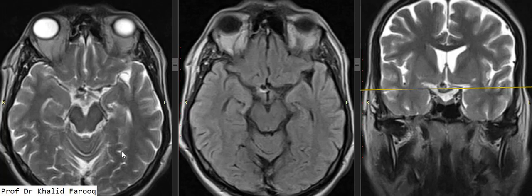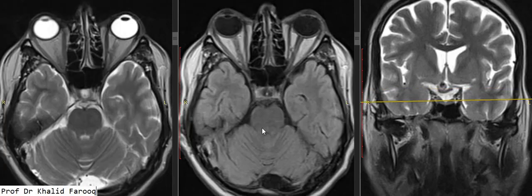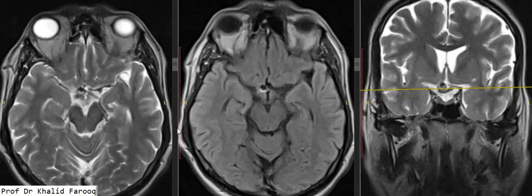We have T2 FLAIR and coronal T2 weighted sequence. On the axial FLAIR sequence we can see the optic nerves, medial and lateral rectus muscles, eyeballs, ethmoid air cells, and this is the pituitary stalk and pituitary fossa.